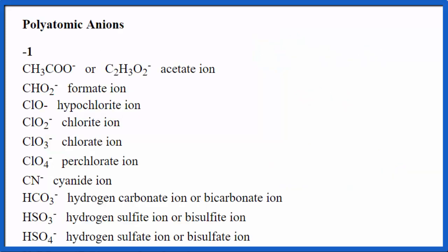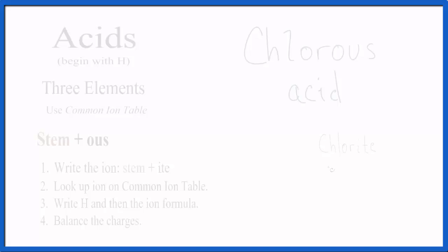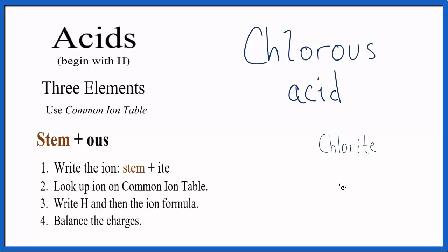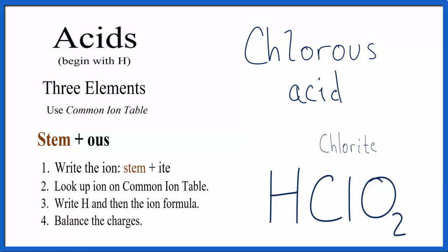We look up chlorite on the common ion table. As we look down, we see that chlorite is ClO2 minus. Back to our rules and we write ClO2 minus for the chlorite ion. We then write H in front. We know H has a positive charge and that's going to balance out with the negative charge. So we can just get rid of those and that makes HClO2 the formula for chlorous acid.